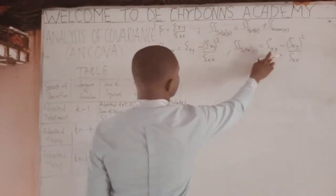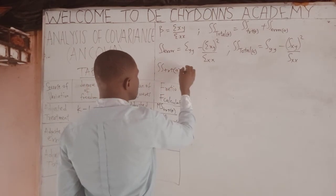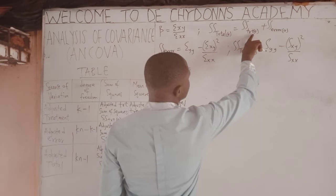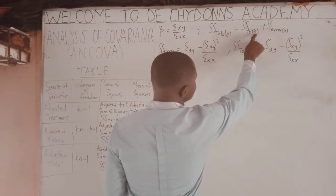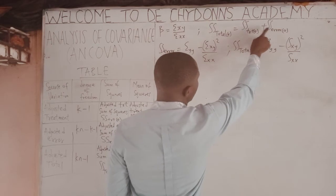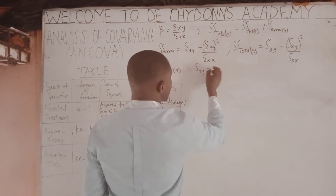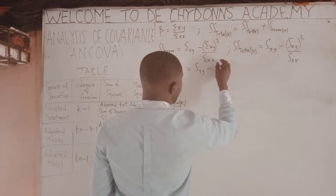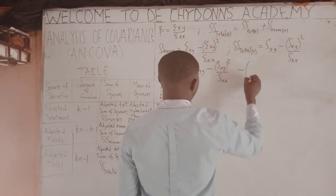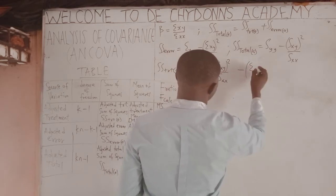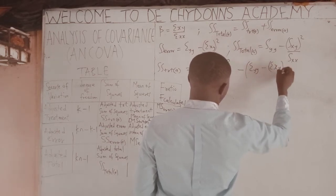When you subtract, therefore SS treatment adjustment will be equal to SS total minus SS error. Since SS total equals SS treatment plus SS error, SS treatment adjustment gives us SYY total minus SXY squared over SXX total, minus the bracket of SYY error minus SXY error squared over SXX error.